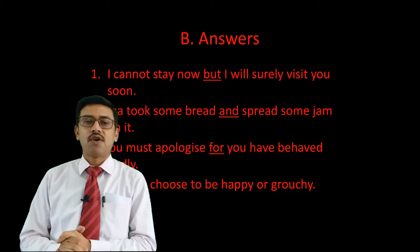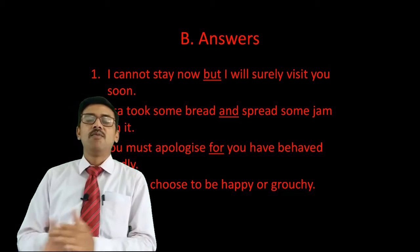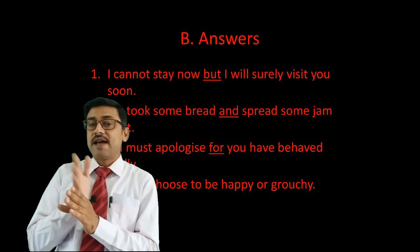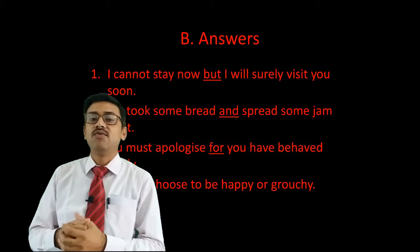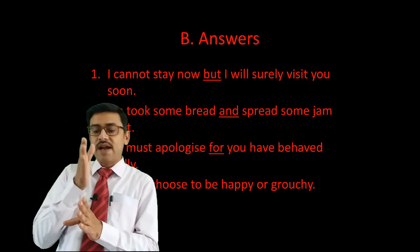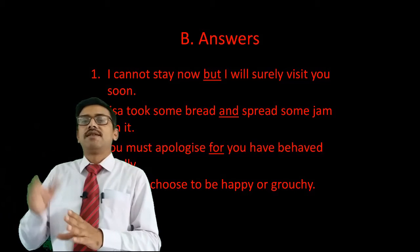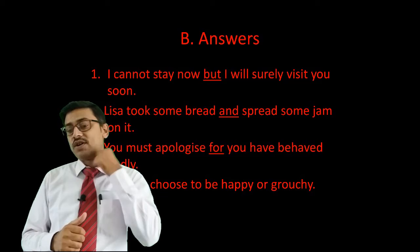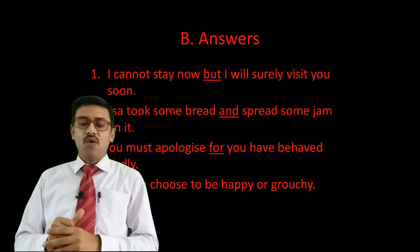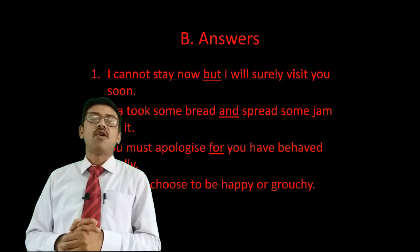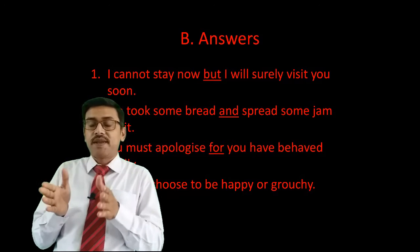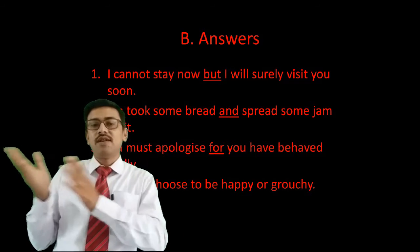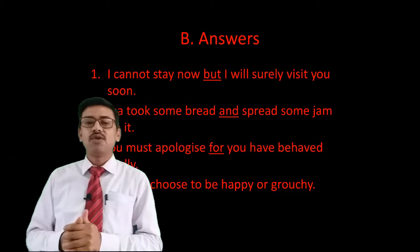Sentence number five: 'You must apologize for you have behaved badly.' When we use 'for,' something has been said or done before, and for that reason you are saying this or should do this now. Sentence number eight: 'One can choose to be happy or grouchy.' 'Or' always talks about choice — either you be happy or you be grouchy. That is how you do exercise B.